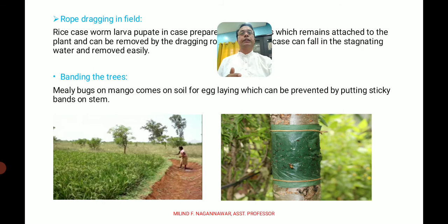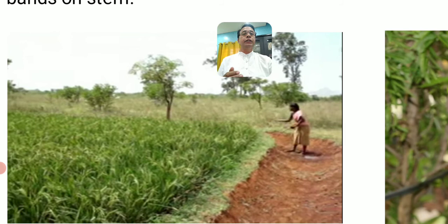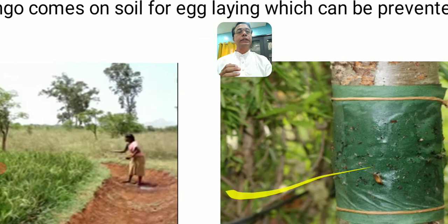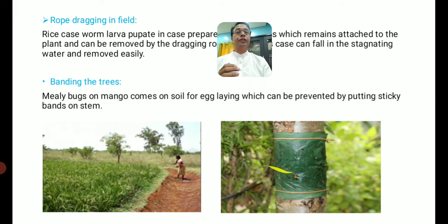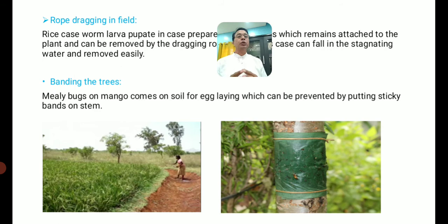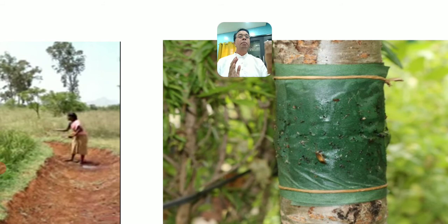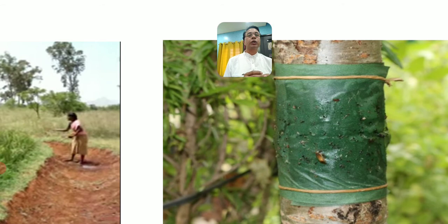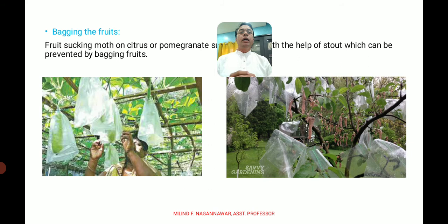Banding of trees is another mechanical method. Some mealybugs on mango come down to the soil for egg laying, which can be prevented by placing sticky bands on the stems of the trees. As seen in the photo, sticky bands are placed on the stem, and when insects encounter the sticky band they become trapped and can be mechanically removed.